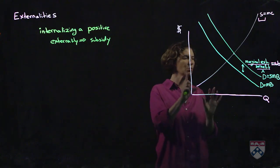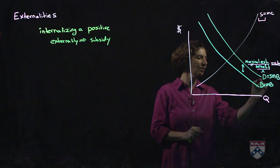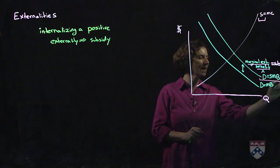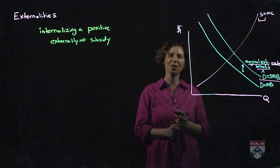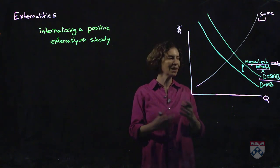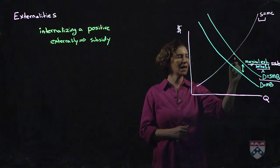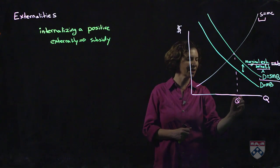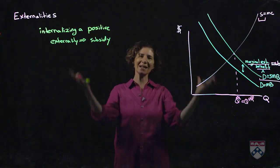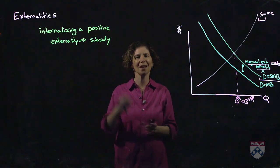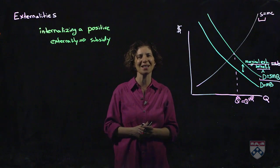And by doing that, we've shifted out the demand curve, so that the shifted out demand curve is exactly equal to the social marginal benefit. We now get an equilibrium where demand equals supply, and lo and behold, this market equilibrium is not only a market equilibrium, but it's also the efficient outcome. So we've maximized the size of the pie by setting a per unit subsidy.